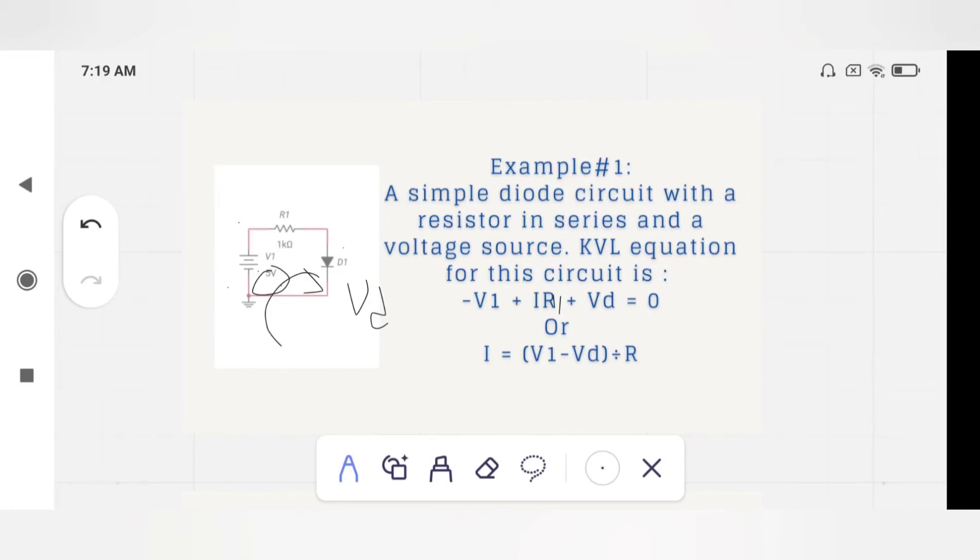You can write the current equation for this circuit as I equals V1 minus VD divided by R. As you know, in series circuit current remains the same. So I is the current flowing from R1 and the same current will flow from D1 as well. So there is a single current in this circuit. Now move forward.